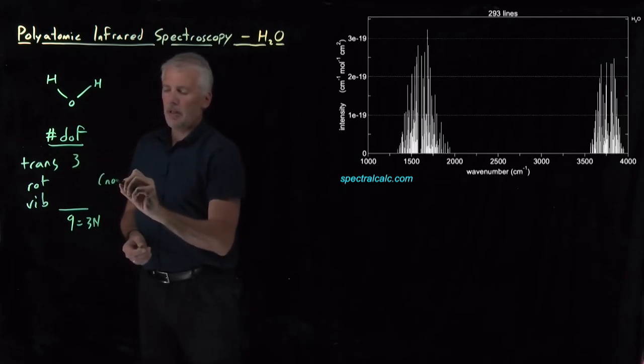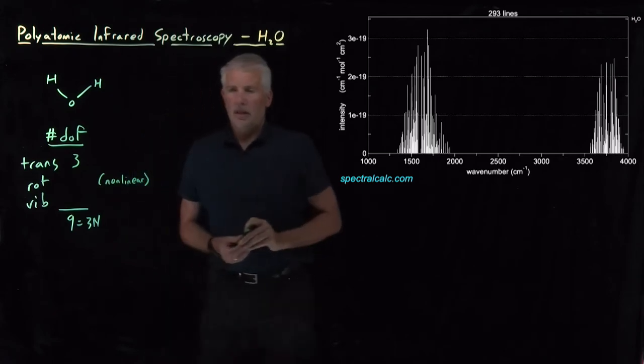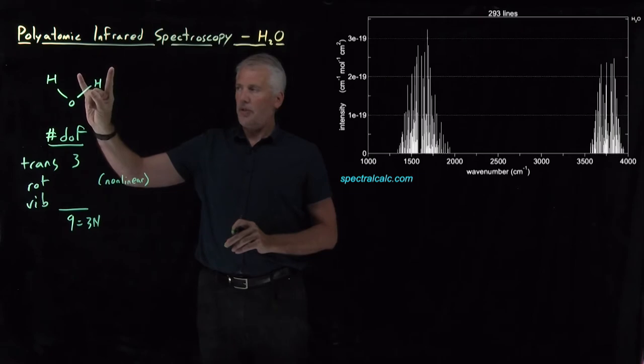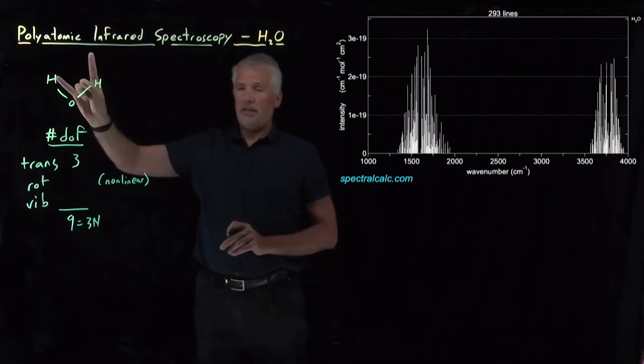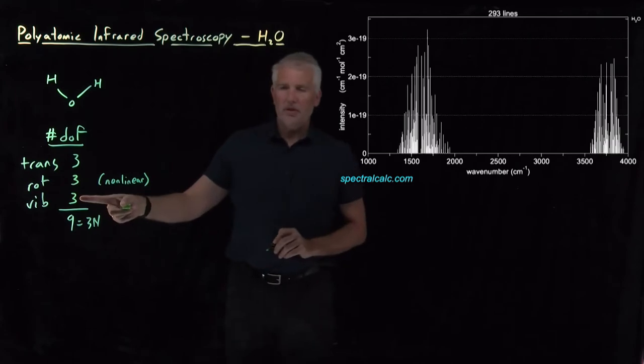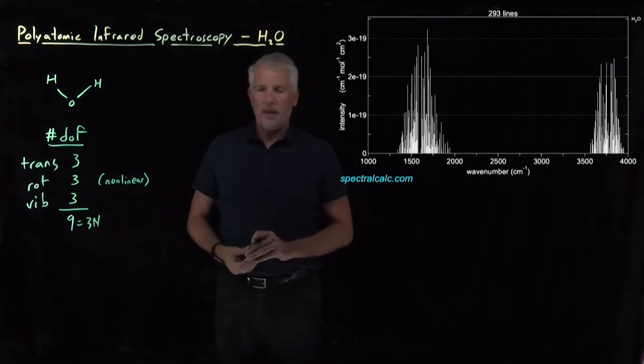But because this is a non-linear molecule, the molecule can rotate around the z-axis or around the x-axis or, in fact, around the y-axis. There's three different ways that it can rotate, and that leaves three vibrational modes in order to add up to nine.